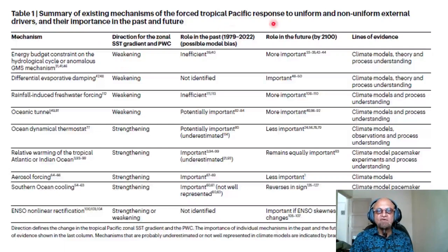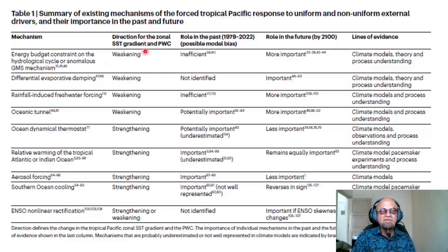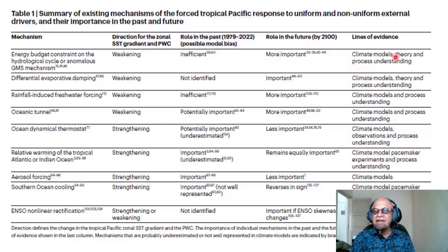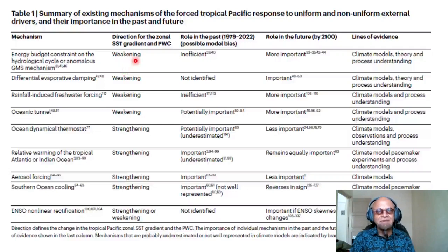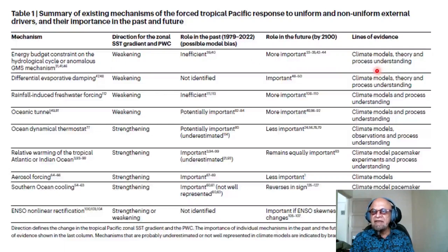Table 1 summarizes existing mechanisms of the forced tropical Pacific response to uniform and non-uniform external drivers, and their importance in the past and future. The columns show: direction for the zonal SST gradient and PWC, role in the past, possible model biases, role in the future, and lines of evidence. For the energy budget constraint on the hydrological cycle — the anomalous GMS mechanism — the direction is weakening, evidence is inefficient, there are possible model biases, and it is more important in the future. Evidence comes from climate models, theory, and process understanding.